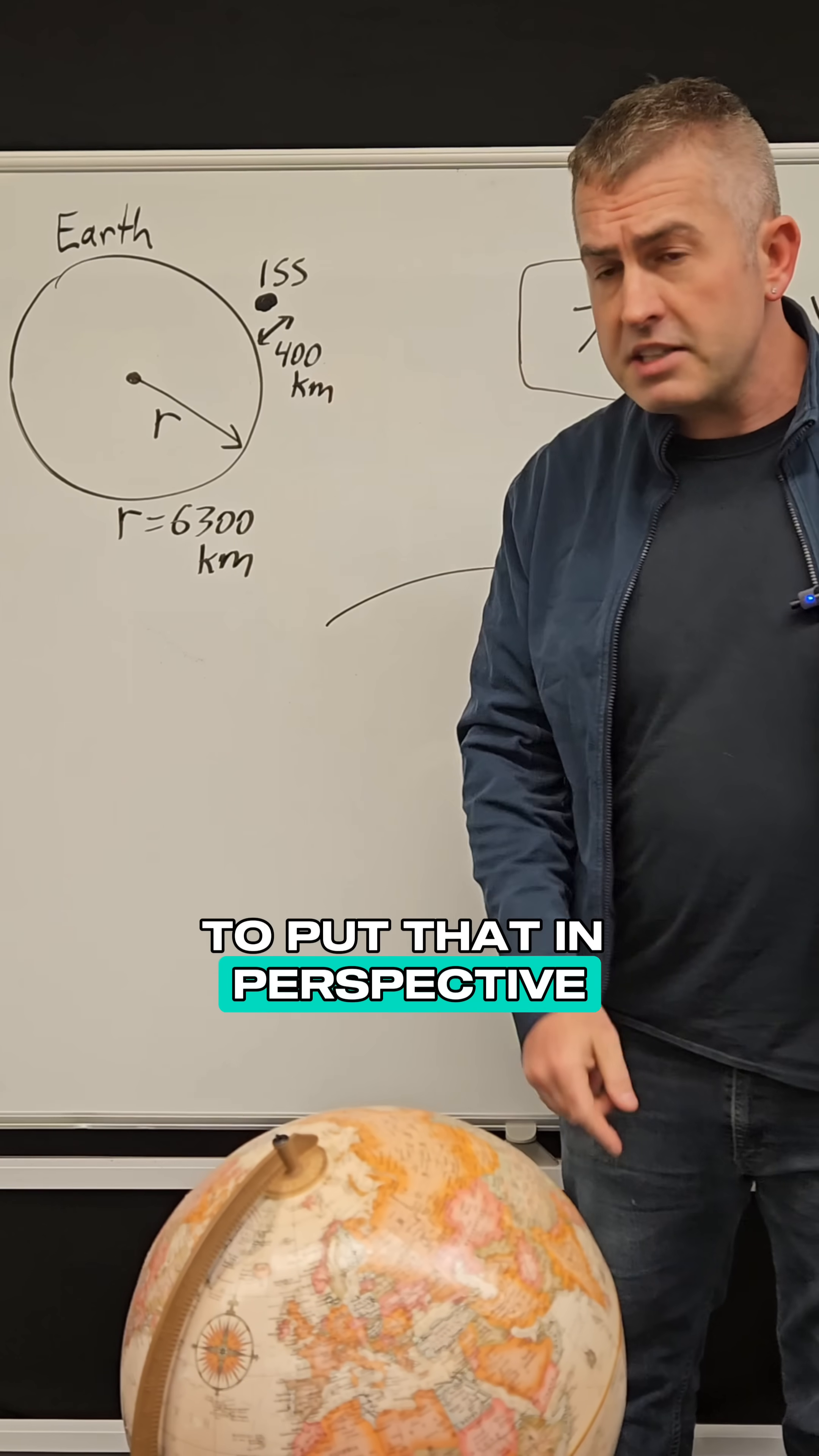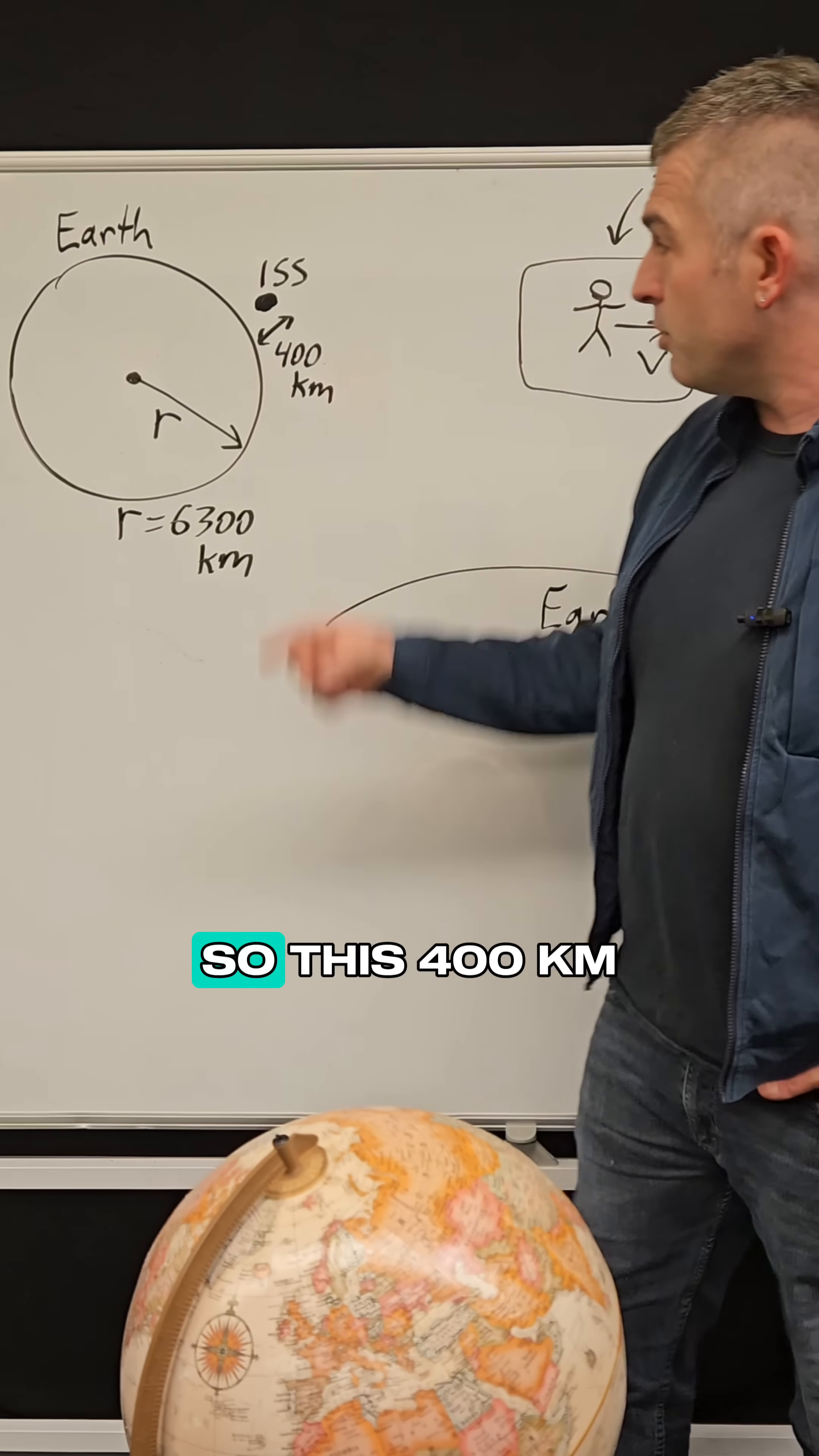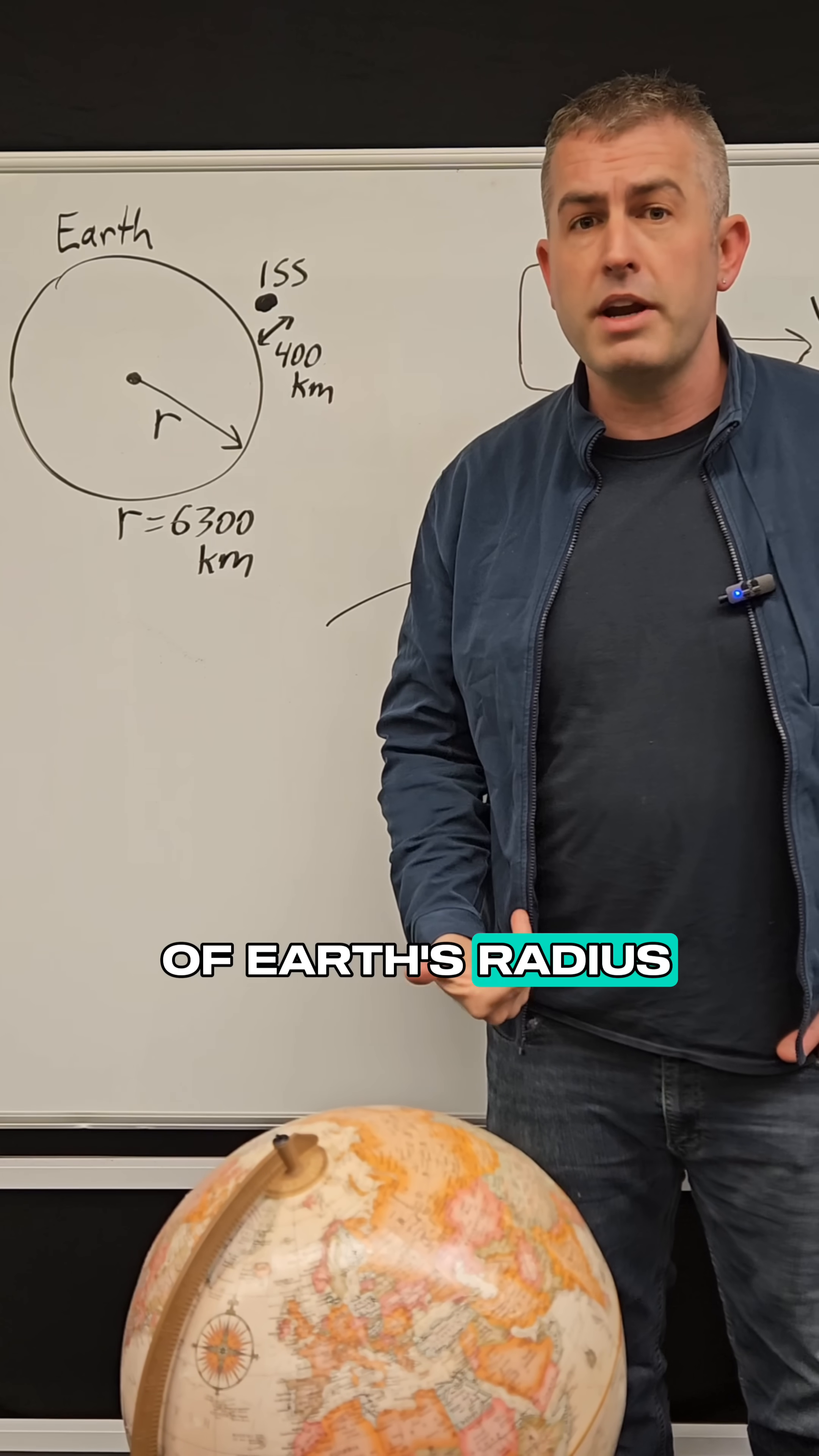To put that in perspective, the radius of planet Earth, so from the center to the surface, is about 6,300 kilometers. So this 400 kilometers above the planet that the station exists at is only about 5% of Earth's radius.